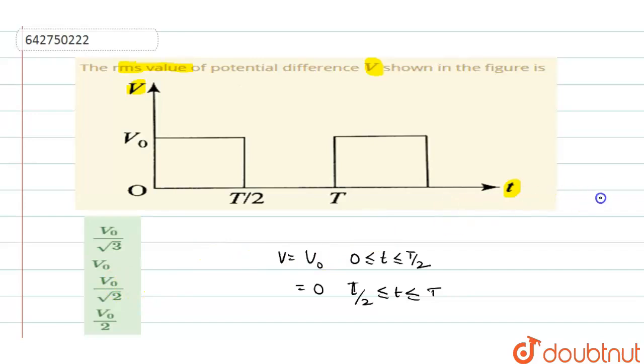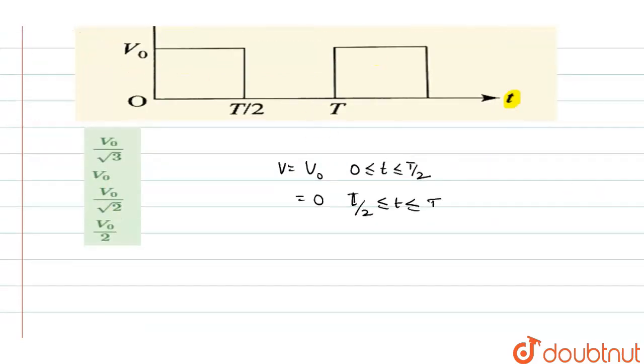Now you have to find the RMS value. The RMS value of voltage, V_RMS, equals the square root of the mean of the square: √(∫₀ᵀ V²dt / T).